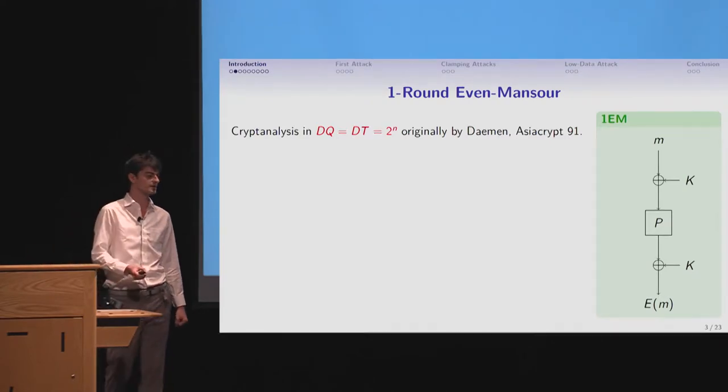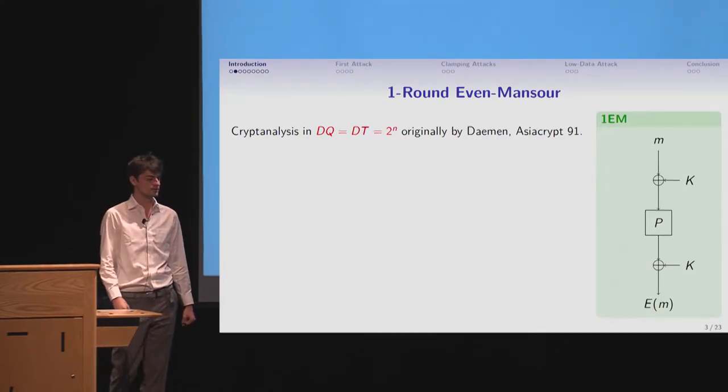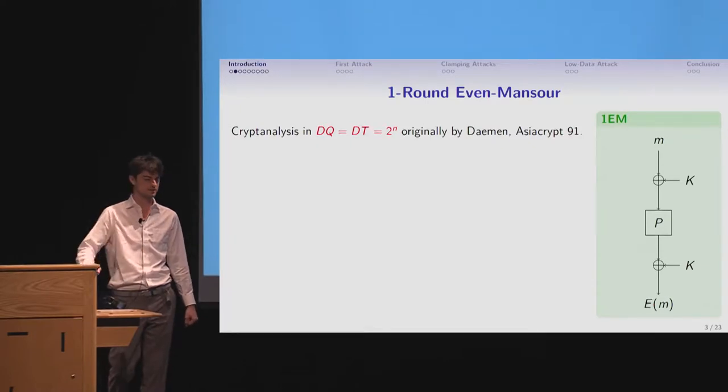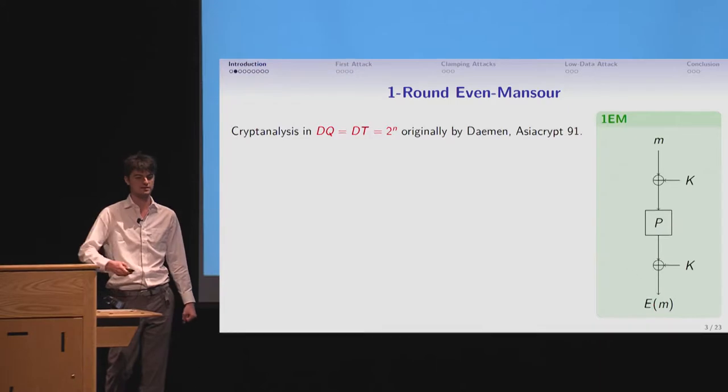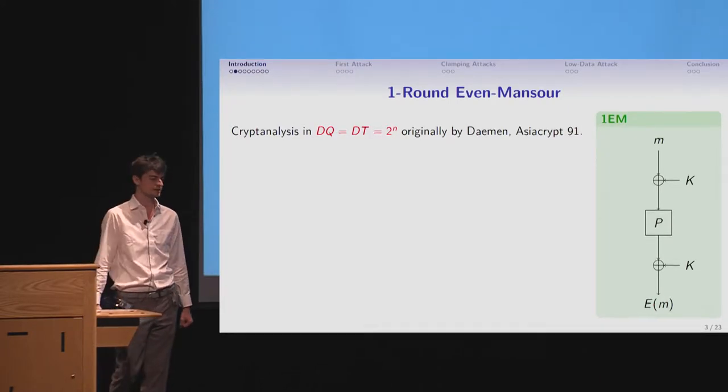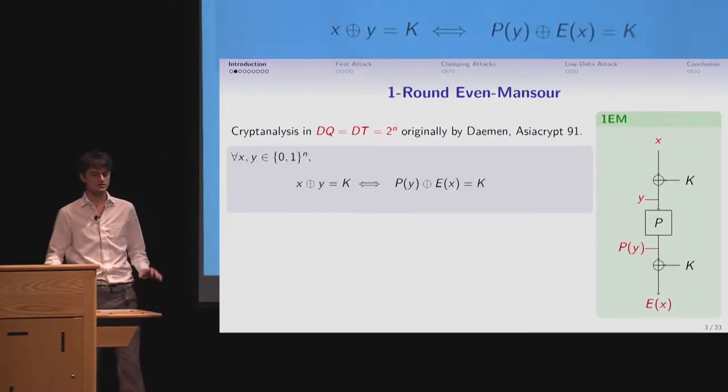In other words, you can prove the security up to the birthday bound, because you have at least one of those values, it has to be at least 2 to the n over 2 to get over 2 to the n. On the attack side, the same year, Daemen proposed an attack in exactly this trade-off, D times Q equals 2 to the n. And even D times T, T being the processing time, the time complexity of the attack.